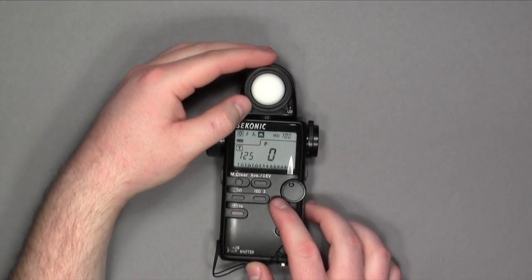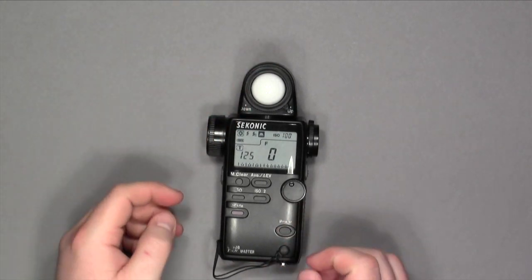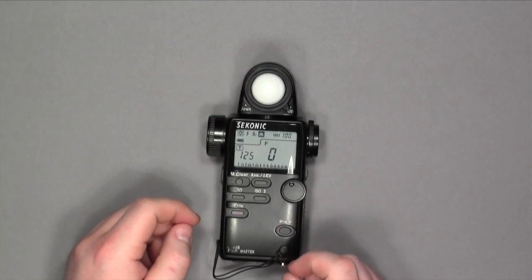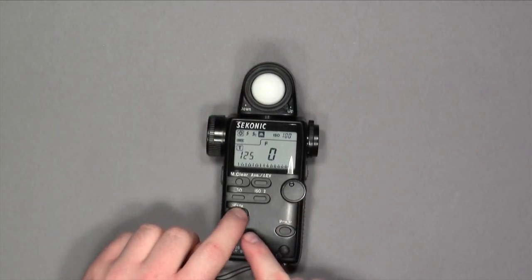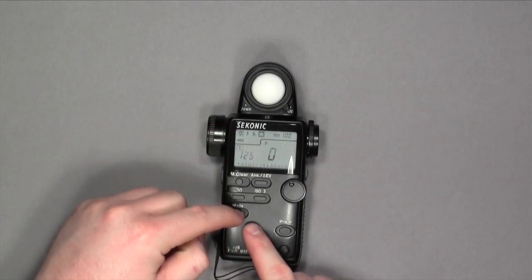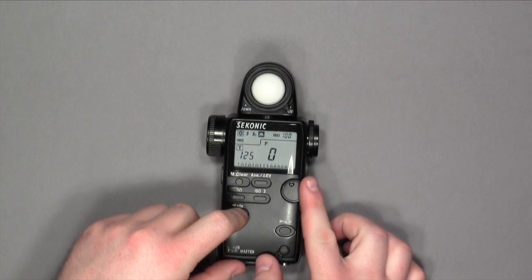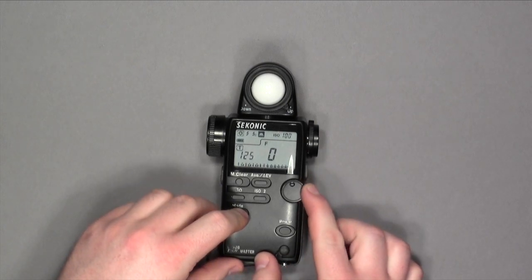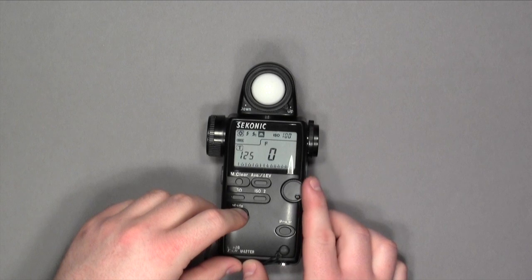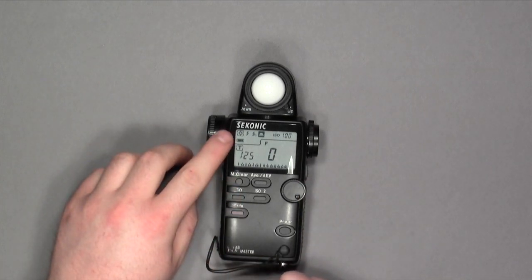With the Lumisphere in the up position, it works the same as the 308 did. We have mode, which changes from continuous light to strobe light. When you press that down, you'll turn this dial clockwise to change the setting. We're going to keep it on continuous mode again.